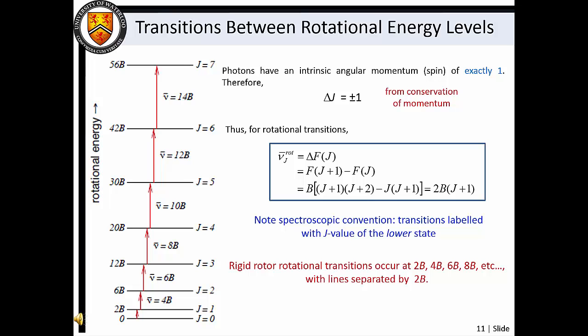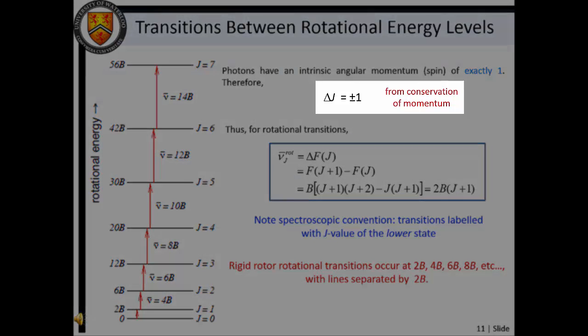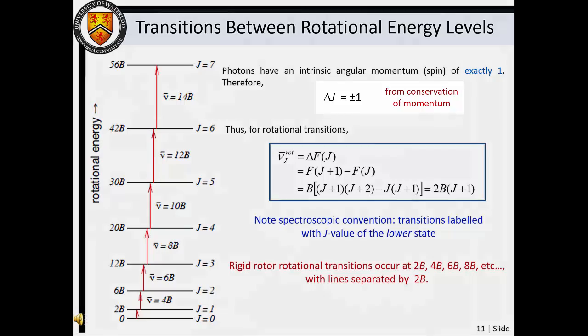Photons have one quantum of intrinsic angular momentum, or spin. So conservation of angular momentum dictates that the total angular momentum of a molecule can only change by plus or minus one upon absorption or emission of a photon. As a result, rotational transitions can only occur between F of J and F of J plus one energy levels. Simple algebra shows that rotational transitions are therefore described by the expression nu-bar equals 2B times J plus one. Note the spectroscopic convention of labeling transitions with the J value of the lower energy state. Thus, our rigid rotor model predicts rotational transitions at 2B, 4B, 6B, 8B, etc., with spectral lines separated by 2B.